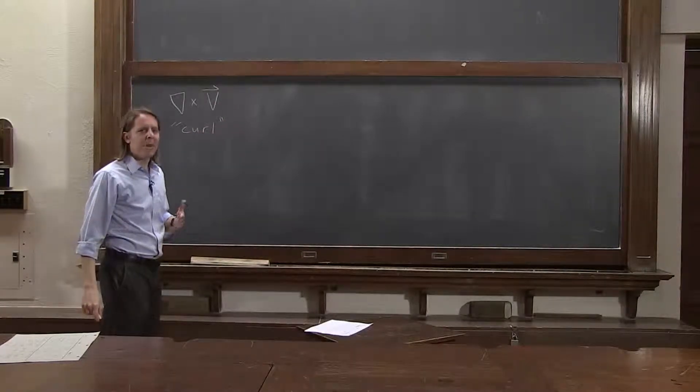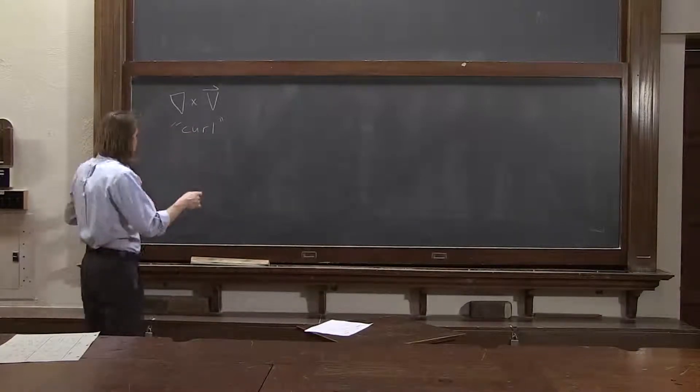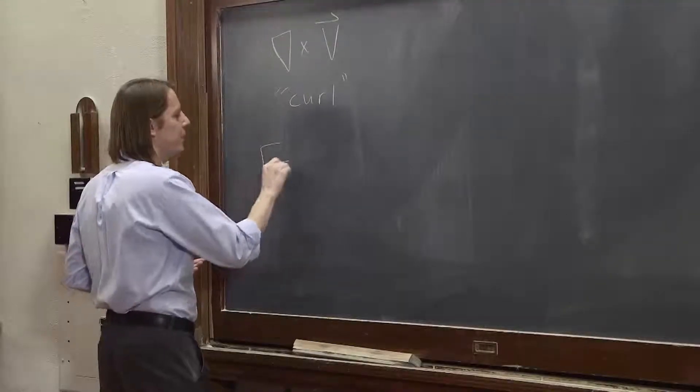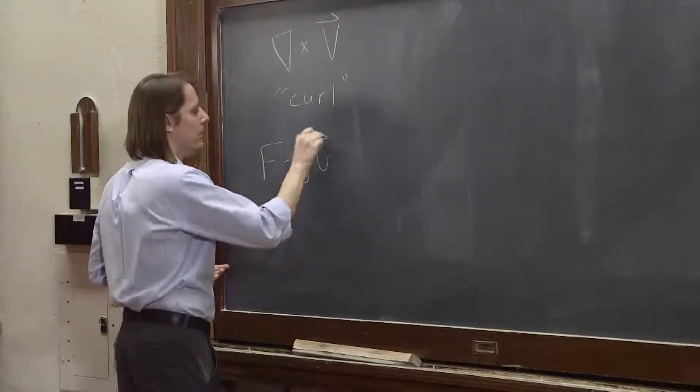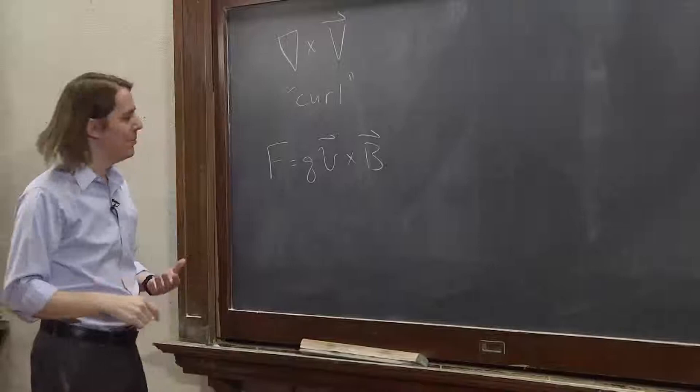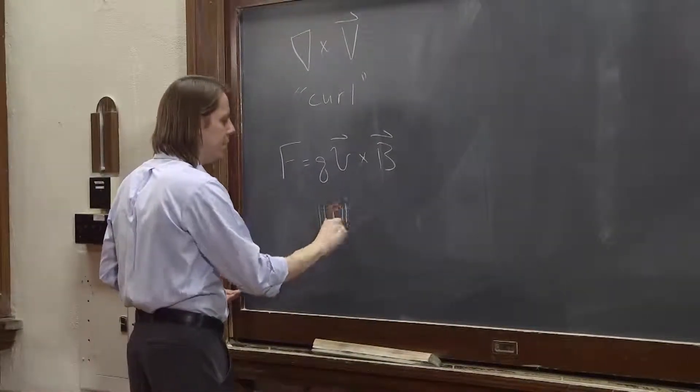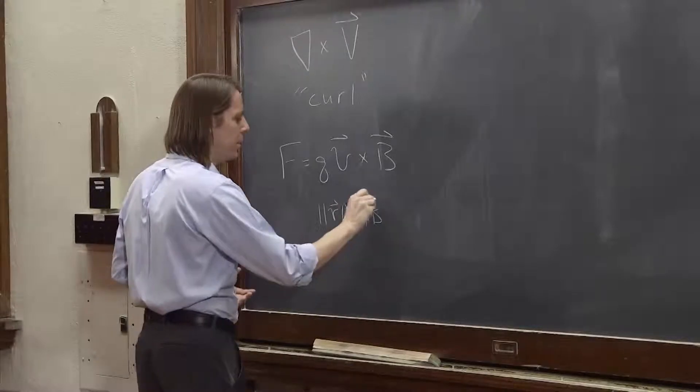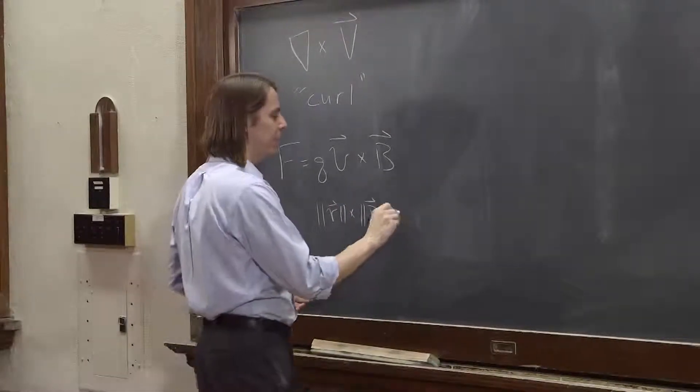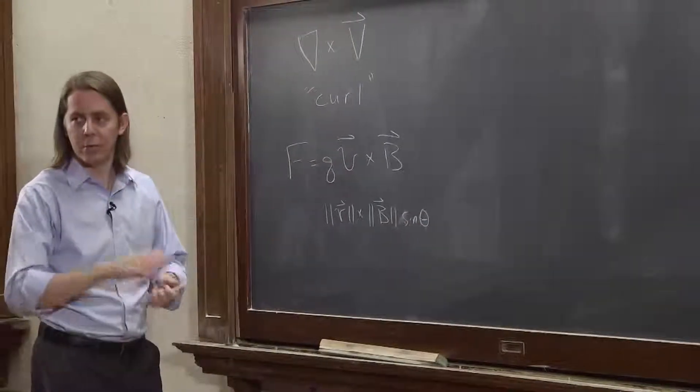So we need to look a little bit carefully about mathematically how do we take the curl. We've talked a lot about the cross product, for example F = q v cross B. We talked extensively about what that means - the magnitude of v times the magnitude of B times the sine of the angle between them, and then you get the direction by the right hand rule.